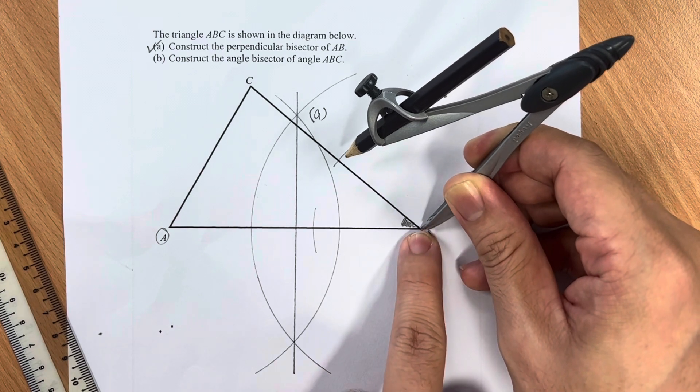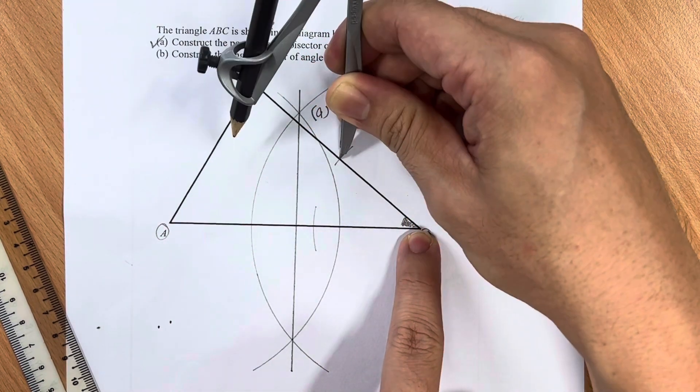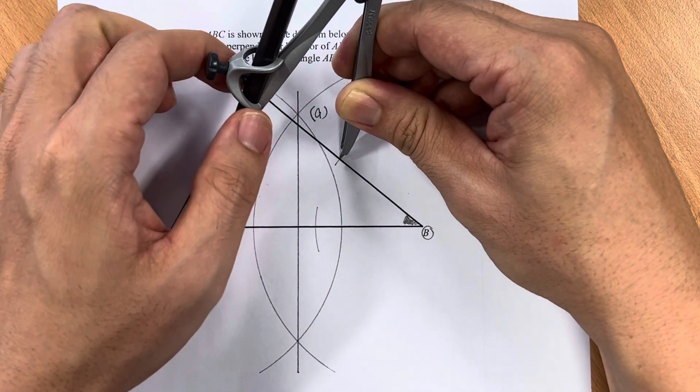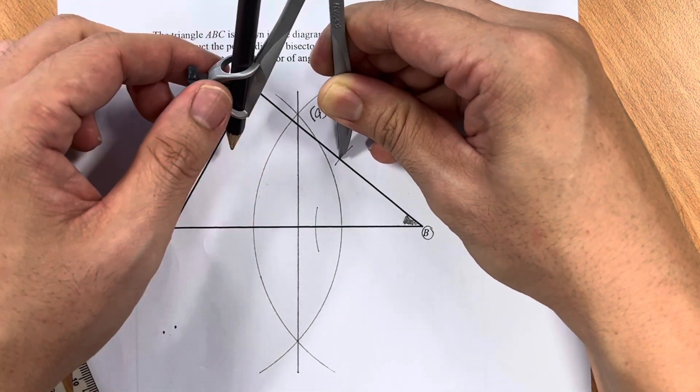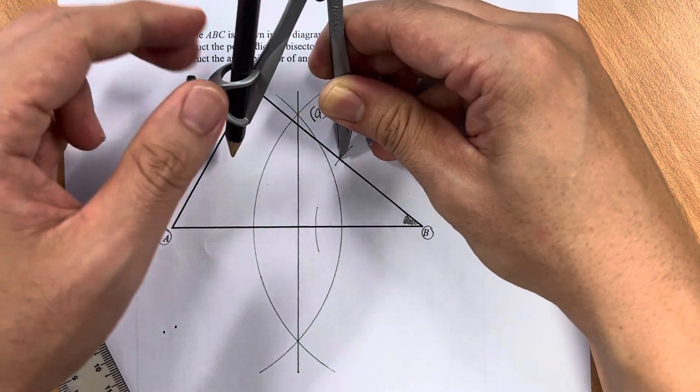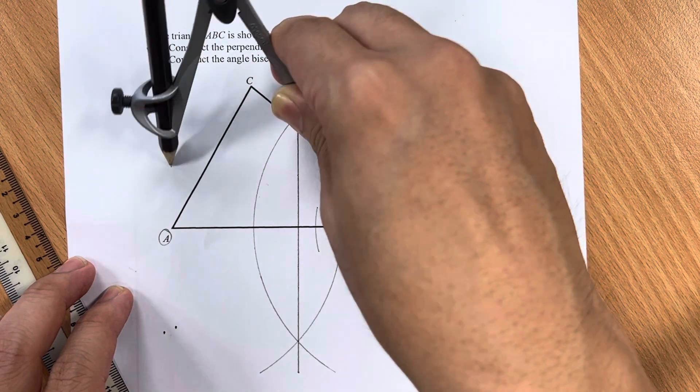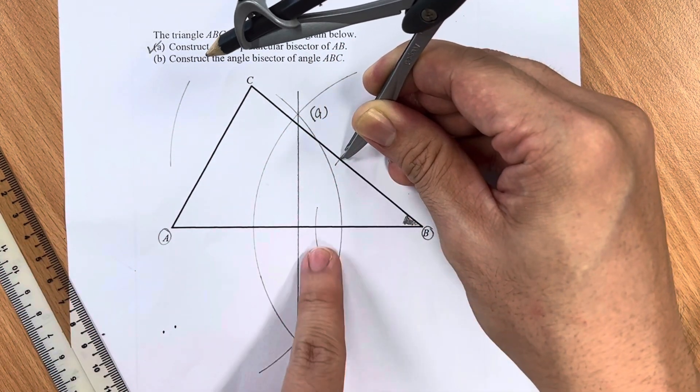After you are done with that, you may move the pointer tip. At this point, you can actually adjust the pencil. I'm going to adjust it and draw an arc here.